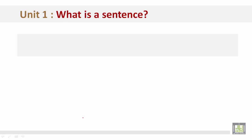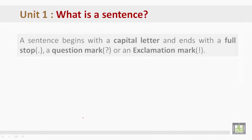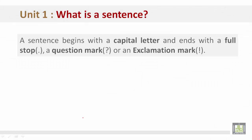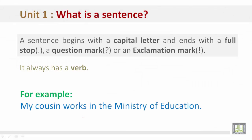What is a sentence? A sentence begins with a capital letter and ends with a full stop, a question mark, or an exclamation mark. It always has a verb. For example: My cousin works in the Ministry of Education.